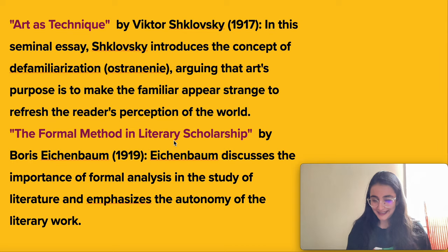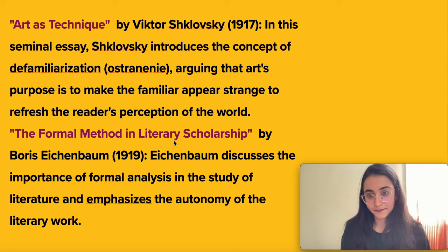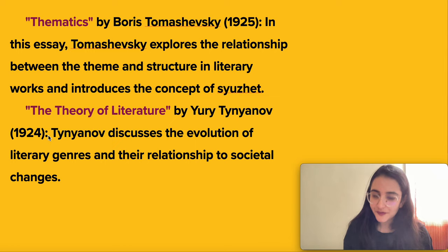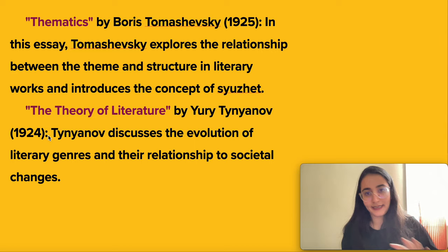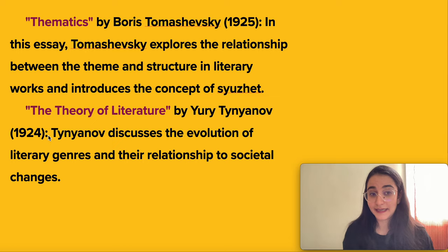The next work is The Formal Method in Literary Scholarship by Eichenbaum, 1919. He discusses the importance of formal analysis in the study of literature and emphasizes the autonomy of literary work. Then we have Thematics by Boris Tomashevsky, in which he builds on the concept of syuzhet, exploring the relationship between theme and structure in a literary work and introducing the concept of syuzhet. And then we have The Theory of Literature by Yuri Tynyanov, 1924, in which he discusses the evolution of literary genres and their relationship to societal changes.